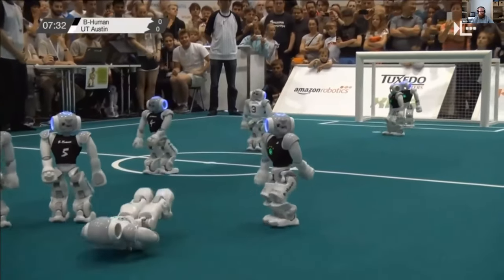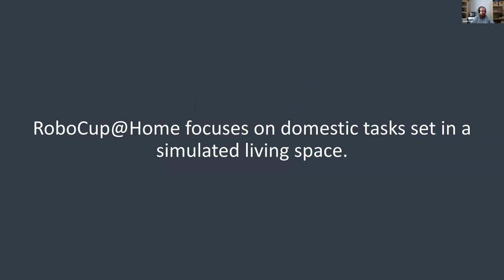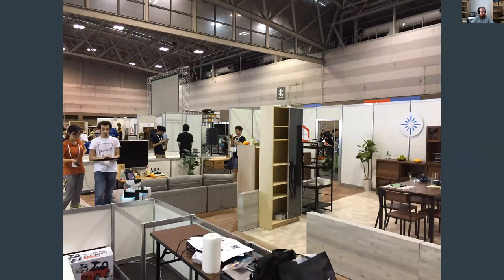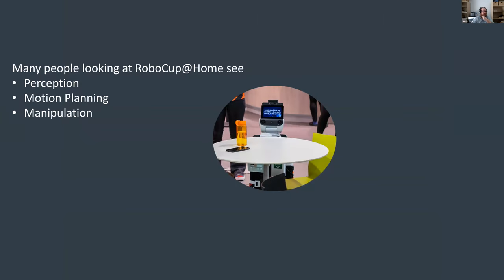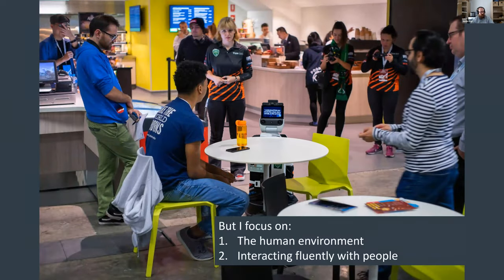I work mainly on RoboCup@Home, which focuses on domestic tasks situated in a simulated living space. A RoboCup@Home arena looks like a TV set built from convention stall furniture — a lot of IKEA furniture since it's available in almost every country. The tasks include taking out trash, putting things away, and serving drinks. What makes it so difficult is it's placed in a human environment where the robot needs to interact fluently with the people around it.